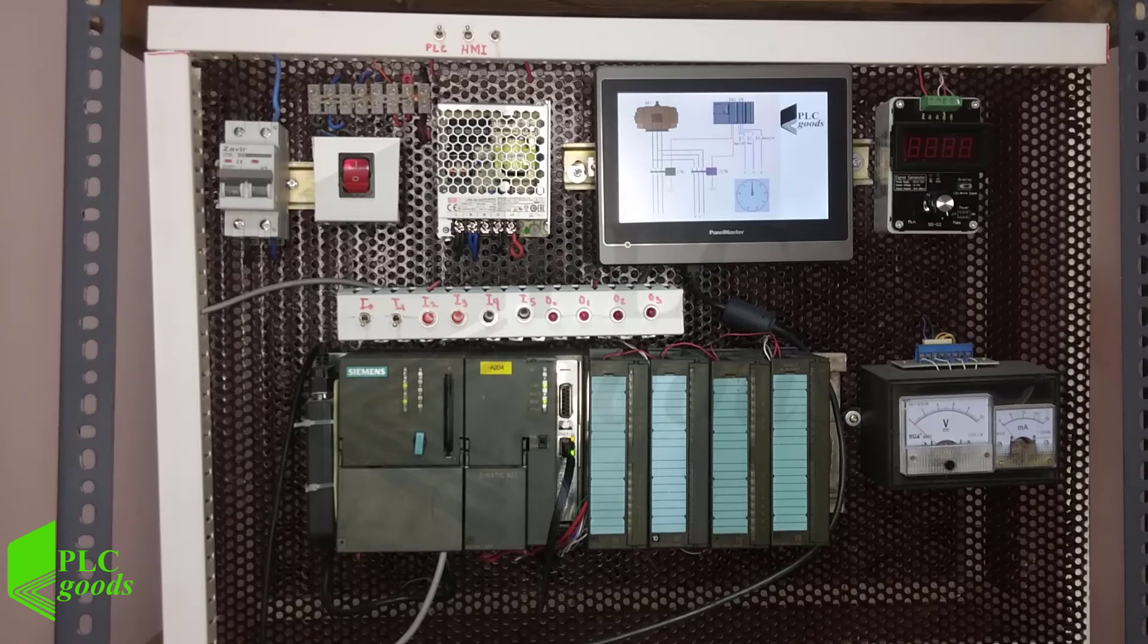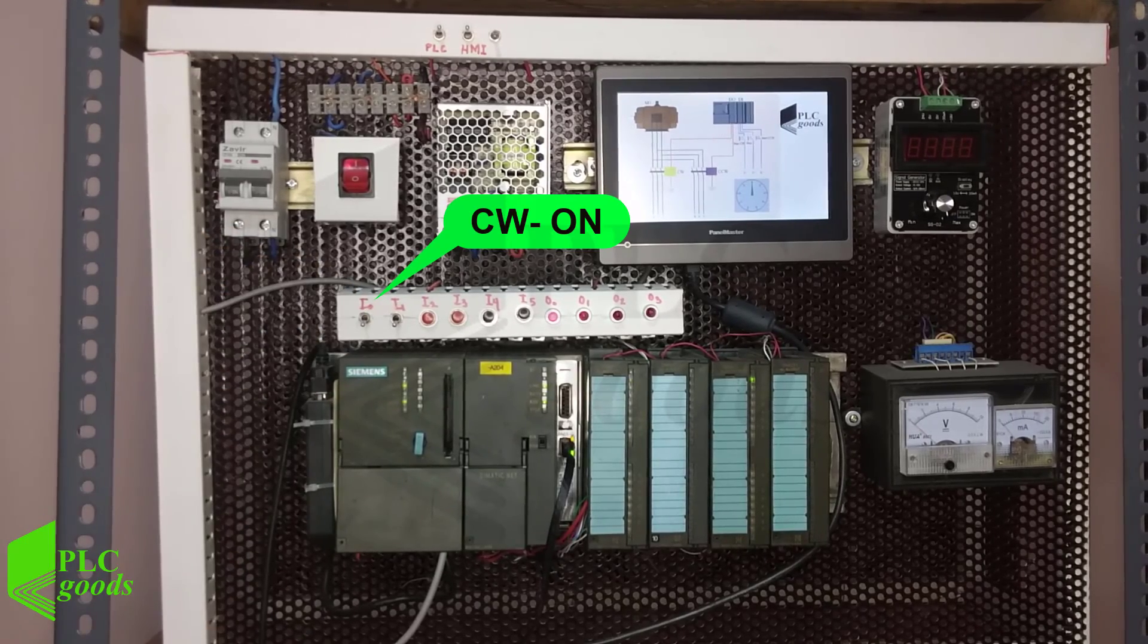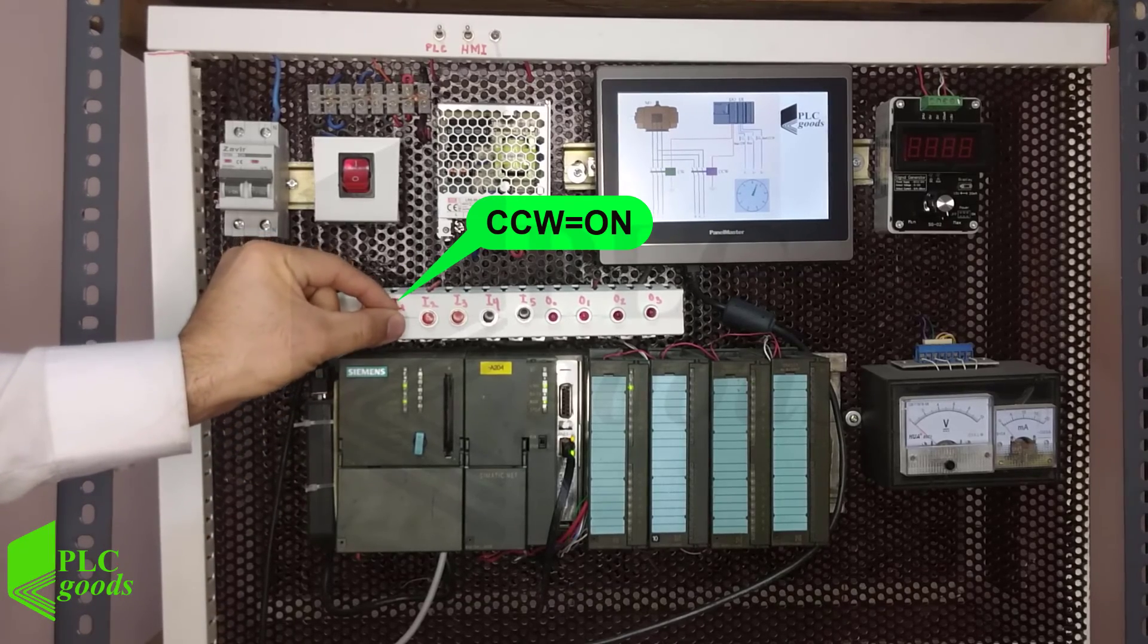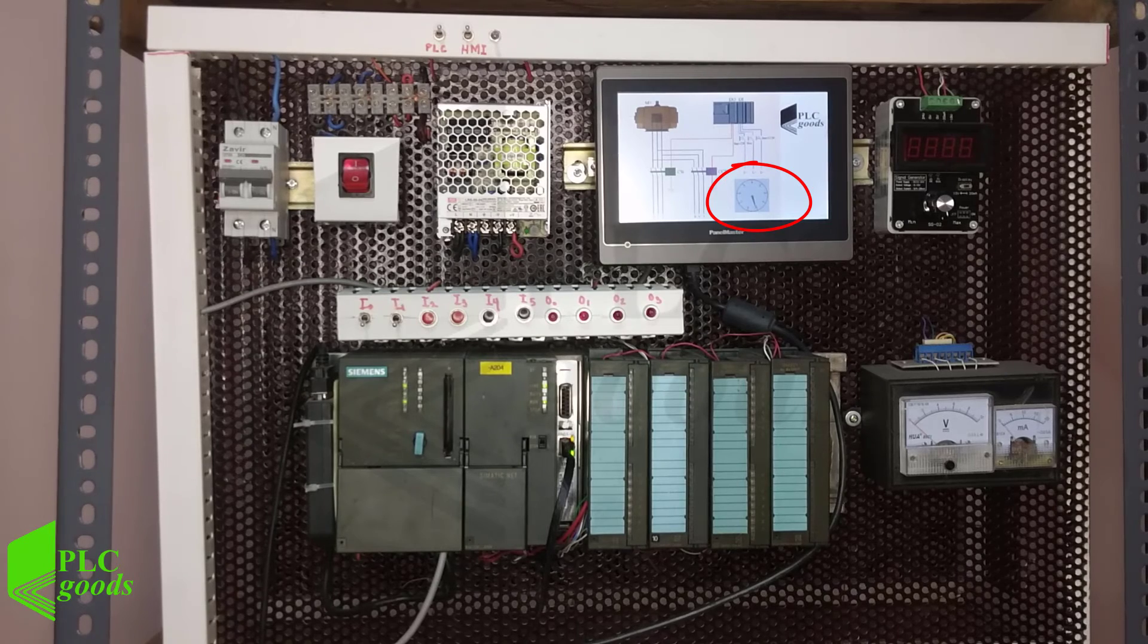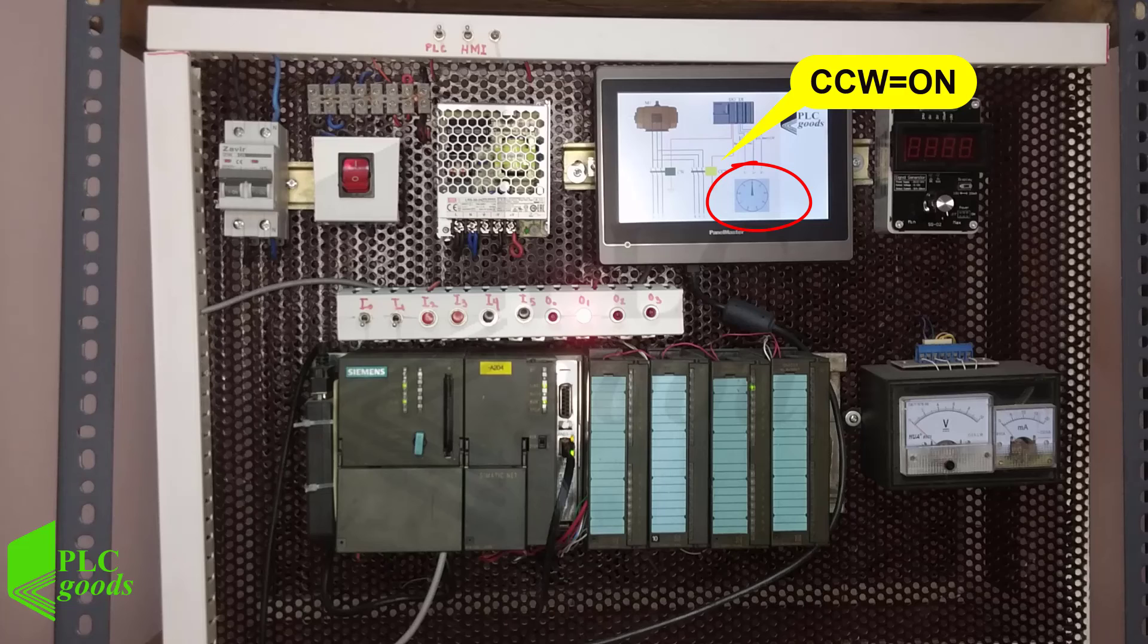Now, I press PB1 to turn it on in clockwise direction and then depress PB2 to change the direction. In this case, the PLC stops the motor, and after a 10-second delay, the motor restarts in counterclockwise direction.